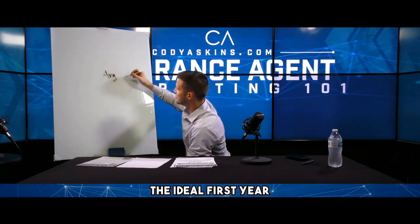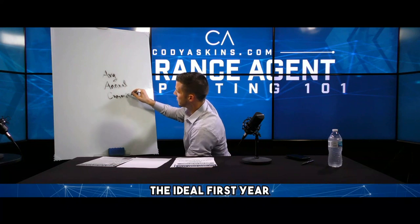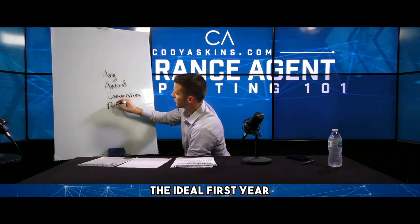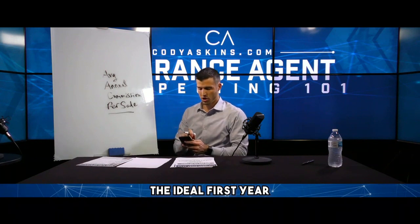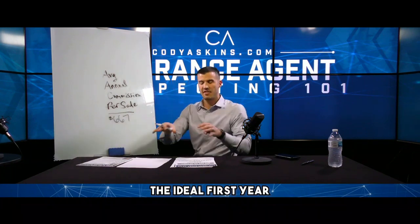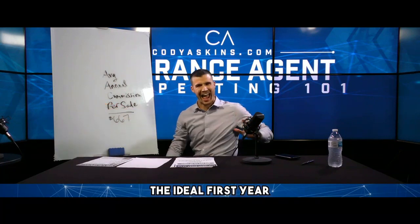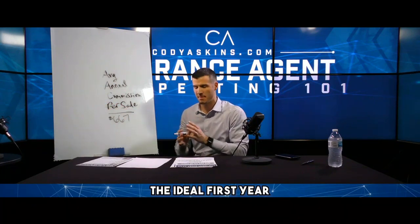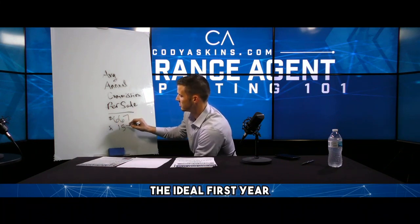What is your average annual commission per sale? Let's just say that it's $667. This will apply to anything — it doesn't matter what you're selling. I may use life insurance as an example, but whether you're selling employee benefits, health insurance, Medicare, property and casualty, or annuities, this system can work for you. So $667 times 150 sales.